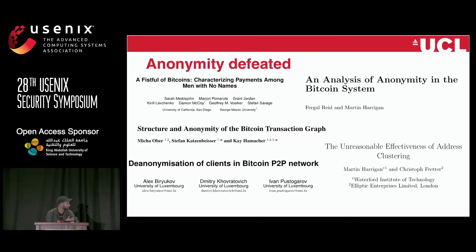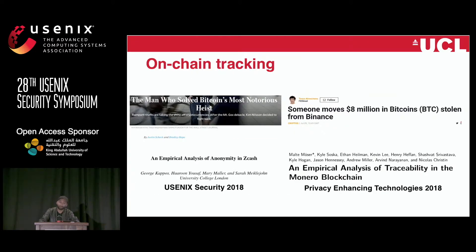Many of these systems use techniques like address tracking, address tagging, and address clustering in order to identify the entities within the system, how they interact with each other, and the overall flow. We've also seen many crimes happen on Bitcoin, which then use these techniques to determine where coins went and how to thwart the crime in progress.